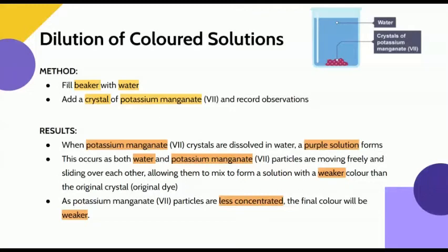Now we look at the practical involving dilution of colored solutions. We have water and crystals of potassium manganate as our colored solution. The method is simple: fill the beaker with water, add the potassium manganate, and record the observations. The first thing we notice is that they dissolve in the water, forming an aqueous solution.